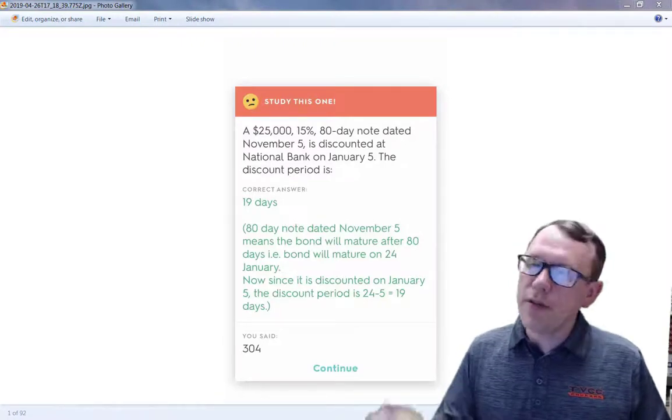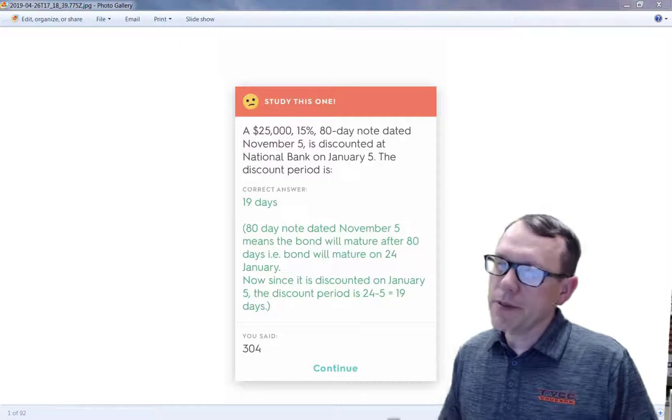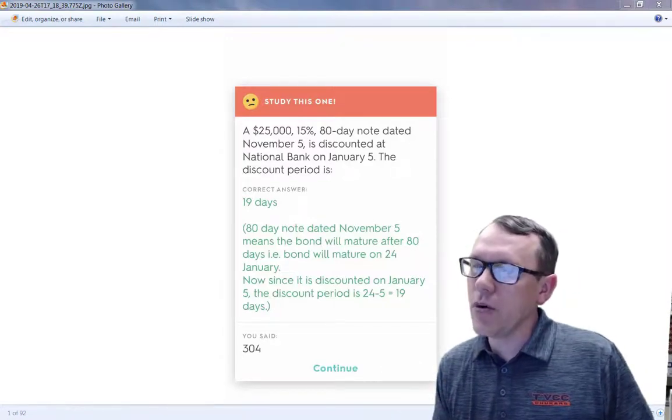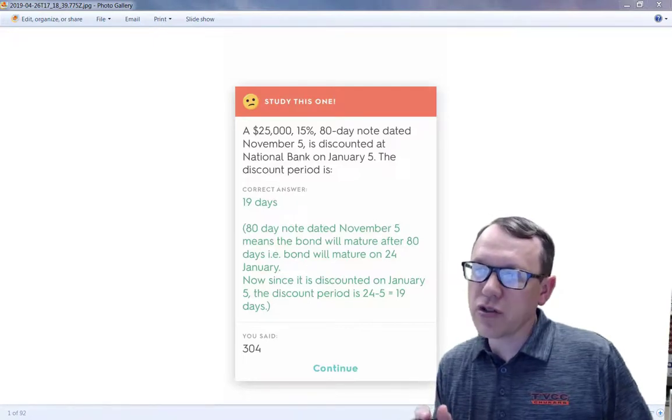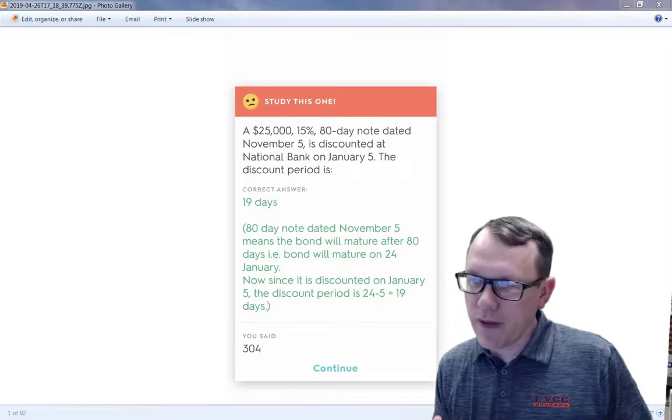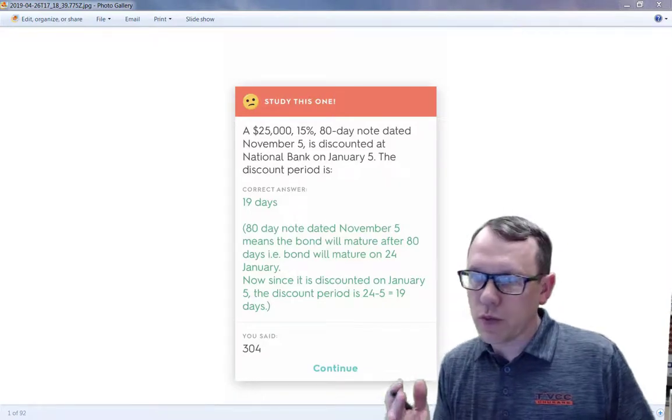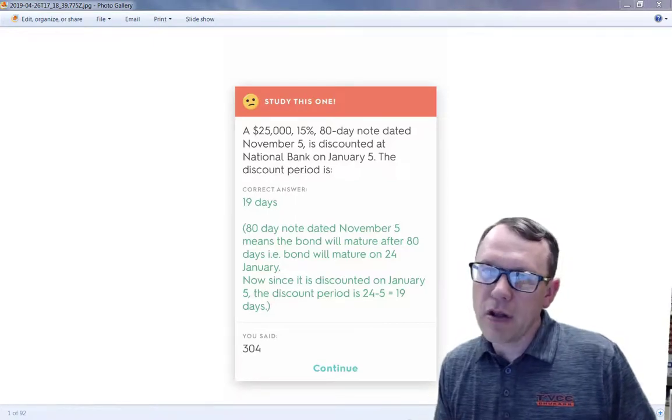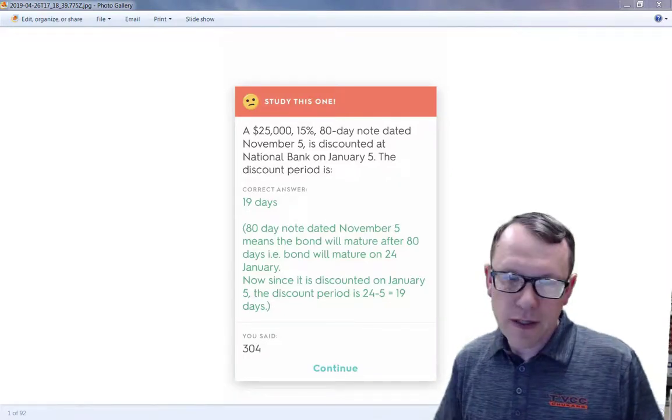Hello, so I had a question about this problem. It says a $25,000, 15%, 80-day note dated November 5th is discounted at National Bank on January 5th. The discount period is what? We're supposed to figure that out. The answer is right here below, but I wanted to explain how this all comes together and give you some graphics and excellent explanation.